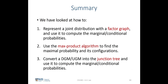In summary, we have looked at how to represent the joint distribution with a factor graph and use it to compute marginal and conditional probability distributions. We also saw that a factor graph uniquely represents the factorization of a joint distribution but does not encode conditional independence in the same way as directed or undirected graphical models, as there is no notion of separation or the Markov property in factor graphs. We saw how to use the max-product algorithm to find the maximum probability configuration, and finally how to convert directed and undirected graphical models into a junction tree to compute marginal and conditional probabilities.